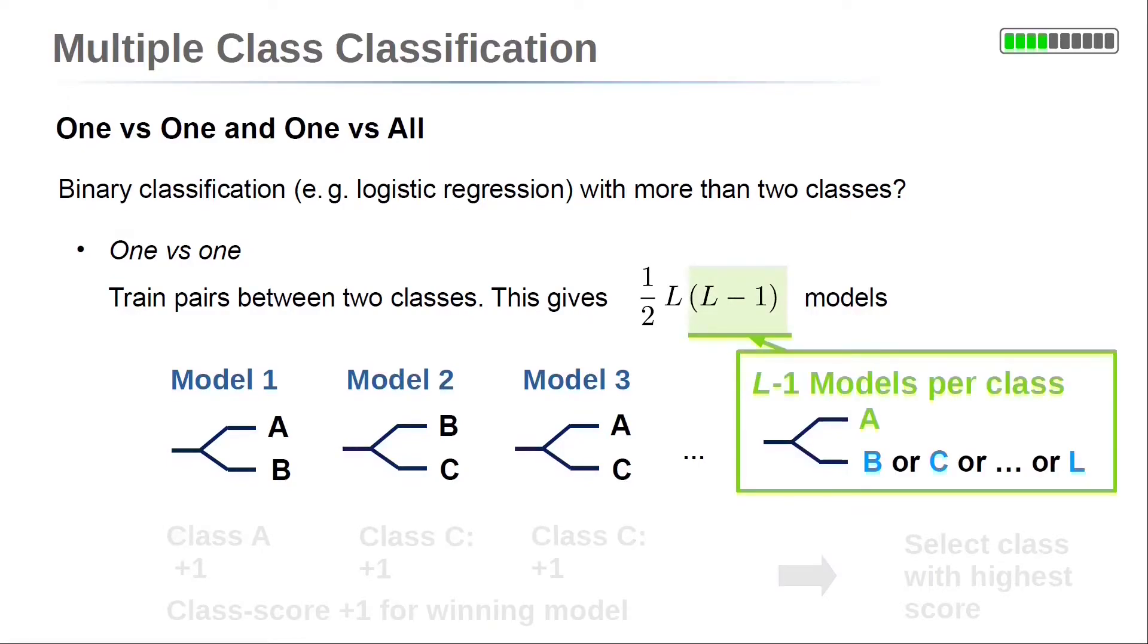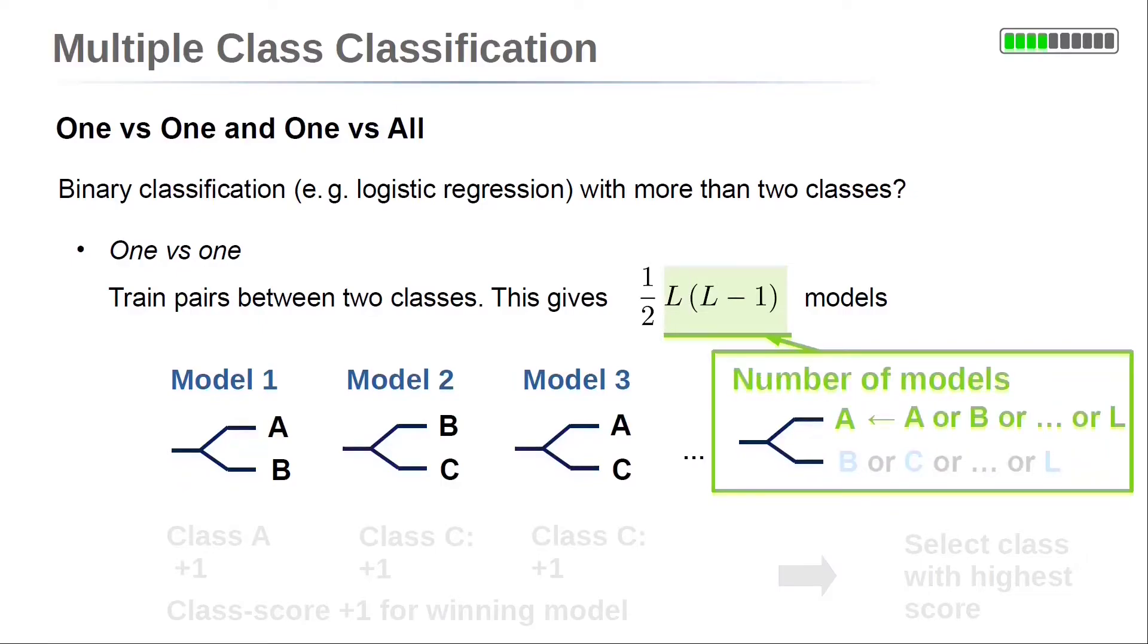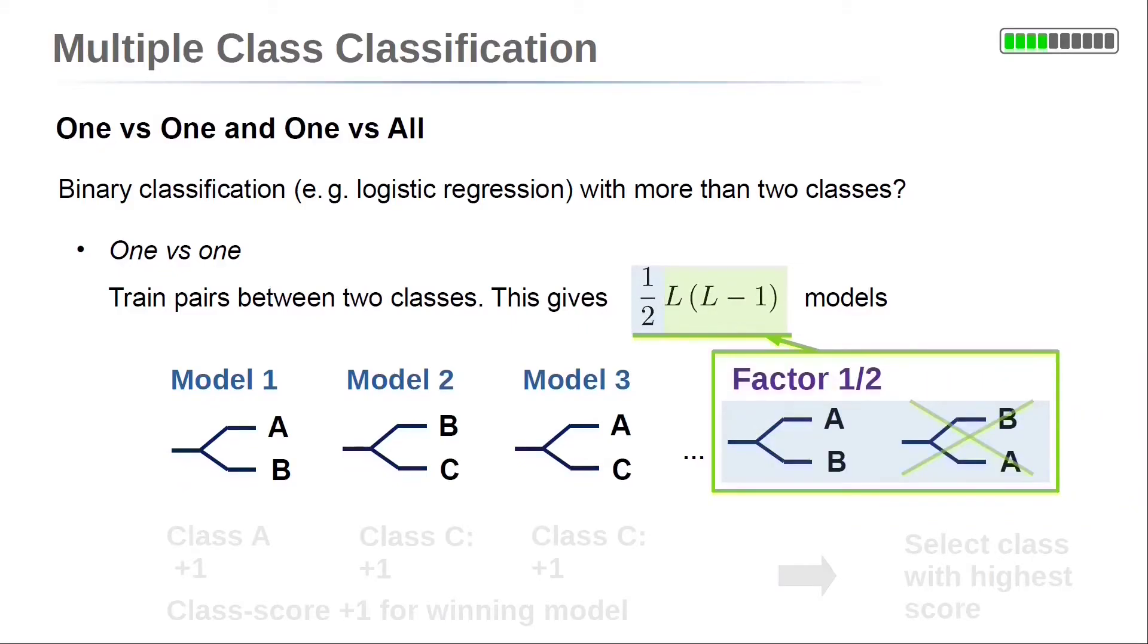For each class we have capital L minus one different models. Further, we have capital L different classes. Because the positions of two classes are interchangeable, we got capital L times capital L minus one divided by two different models.